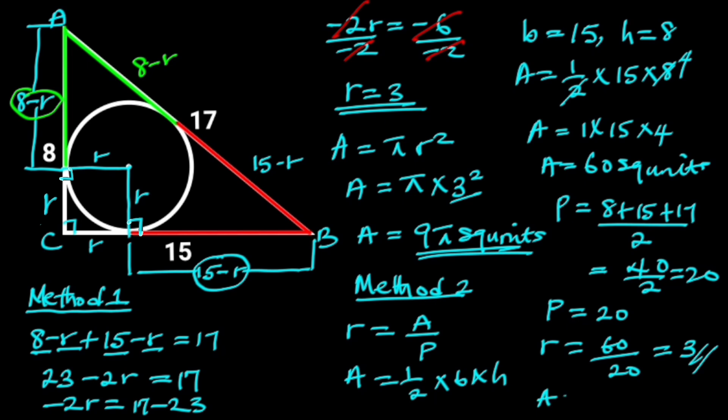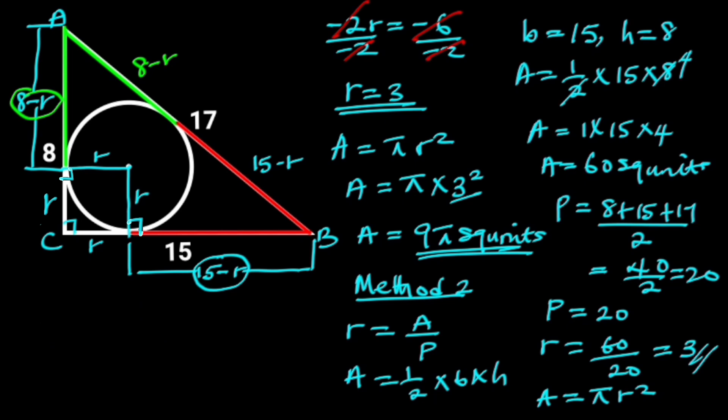Since the area of a circle is given as pi R squared, if we plug in the value of R in this formula, we will have area is equal to pi times 3 squared. 3 squared is 9. Hence, the area is 9 pi square units.